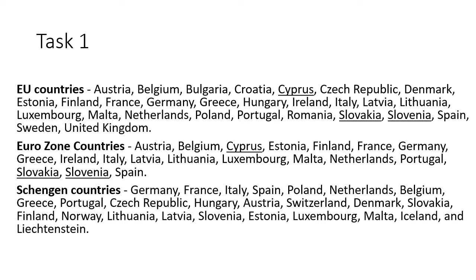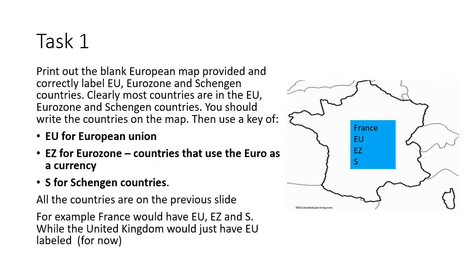The Schengen countries — there are 28 of them and you can see that they overlap. That was what the countries were formed before the European Union. So when you print out your blank European map and label all the countries, you label them in such a way: if it's an EU country, you put EU next to it, EZ for Eurozone, and S for Schengen countries.